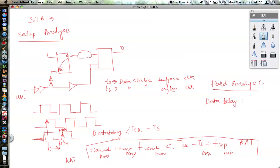So your data delay should be greater than your hold time. What all is part of the data delay? Which is T launch, which is the buffer delay, plus the T clock to Q, plus the combinational delay. This should be greater than your T hold plus T capture.